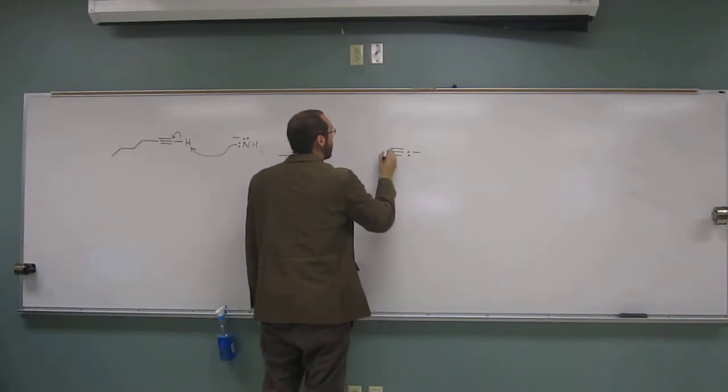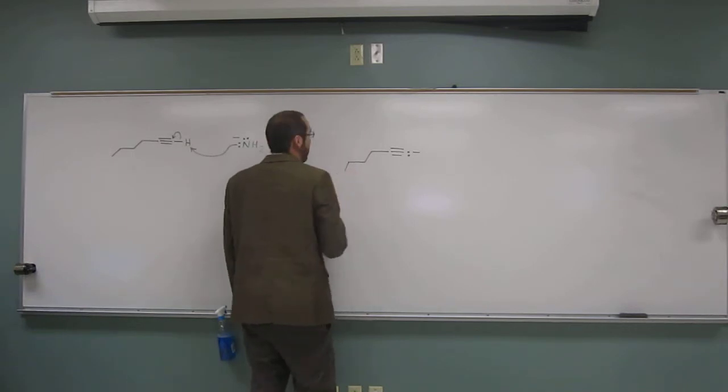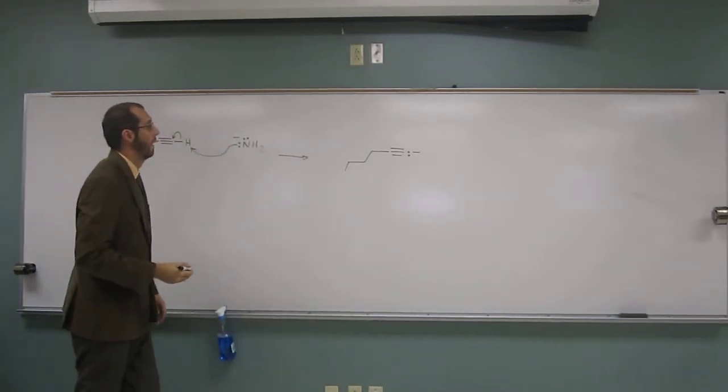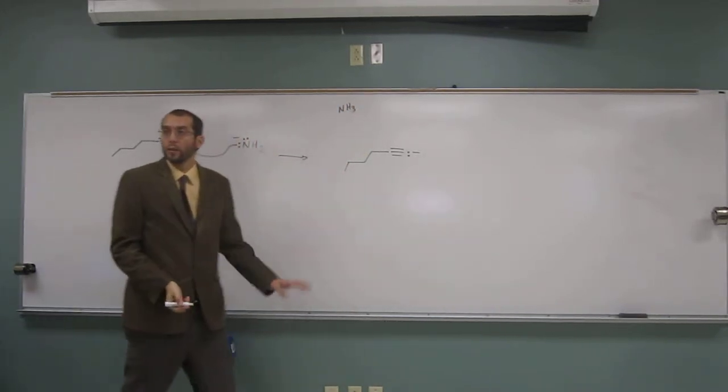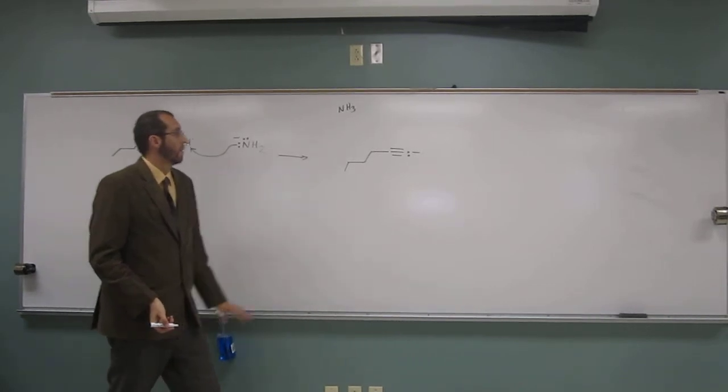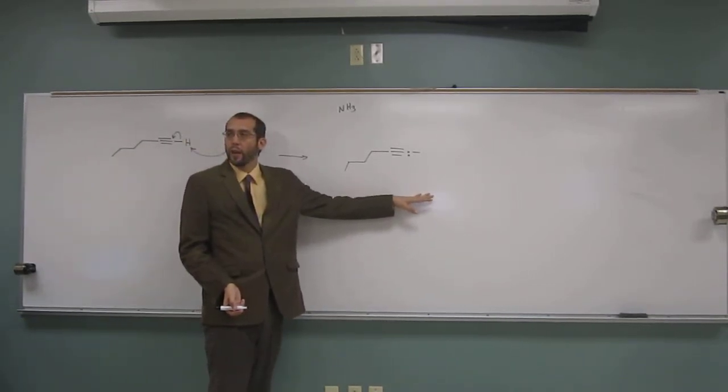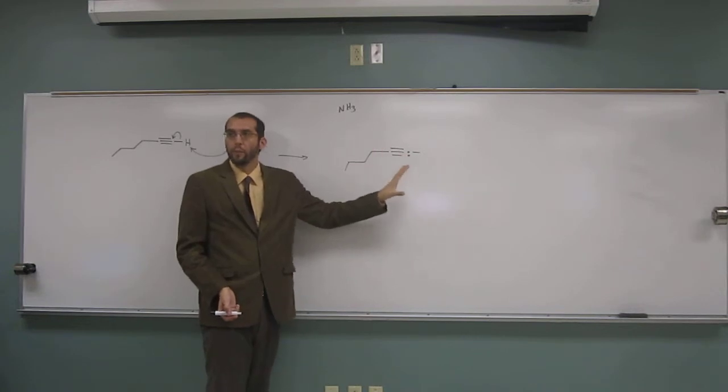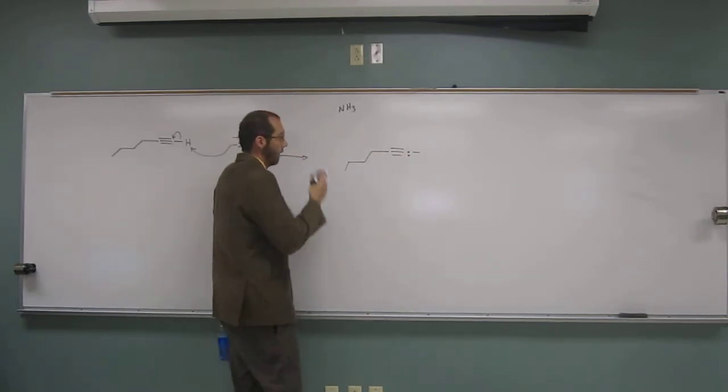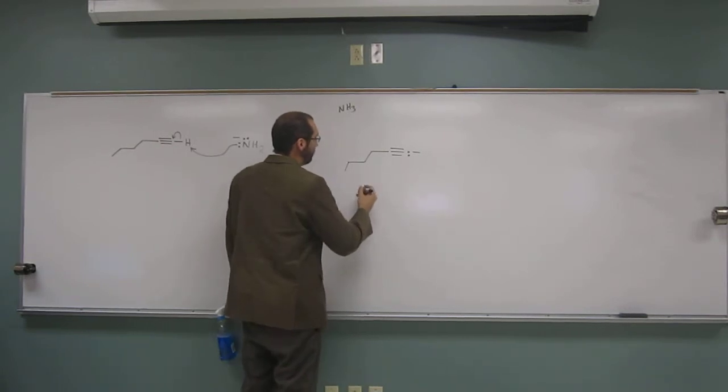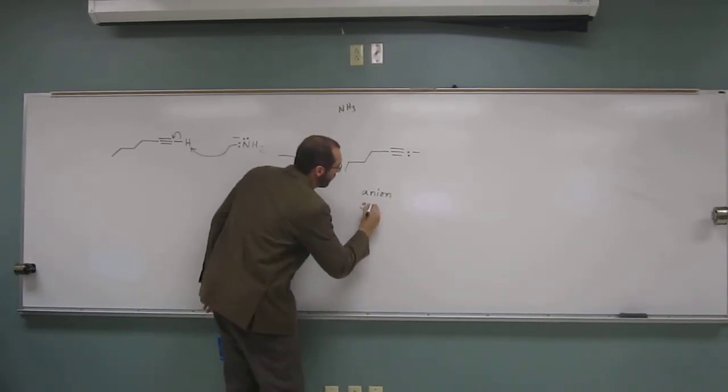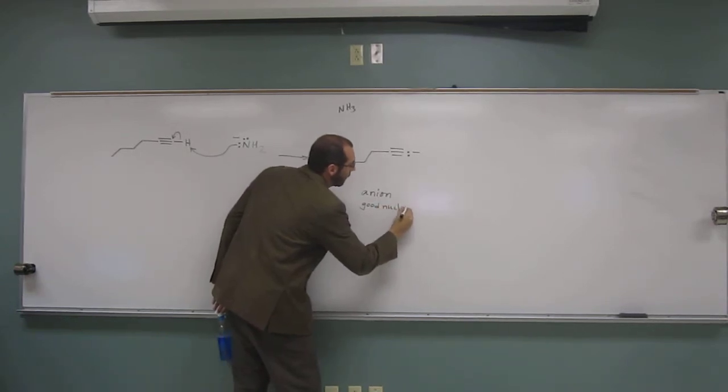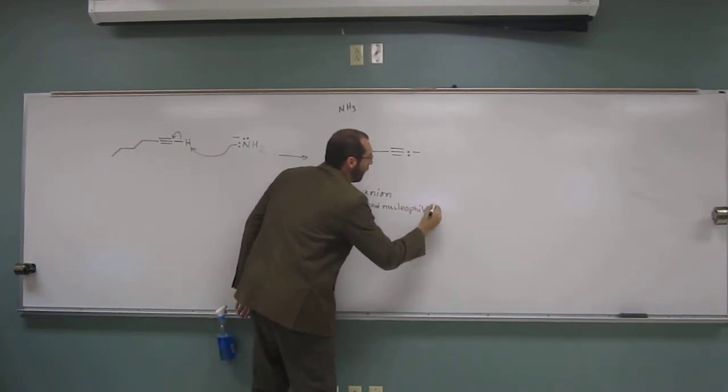So we have that negative charge there now. And if you want to, you can say, we've made ammonia, which is the salt. So that's the intermediate. That's the end of the first step. That's the product of the first step, the intermediate of the two steps. This is an anion, which is a good nucleophile. Very good.